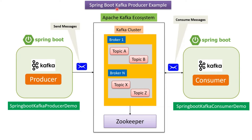In this video tutorial I will explain Spring Boot Kafka producer example. Here you can see the Apache Kafka ecosystem. The Apache Kafka cluster has a number of brokers and topics. The Spring Boot application name is Spring Boot Kafka Producer Demo and it has Kafka producer client code. Using this Spring Boot application we will see how to send messages to an Apache Kafka topic.